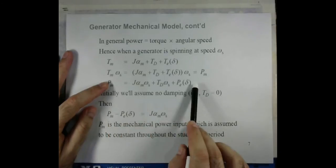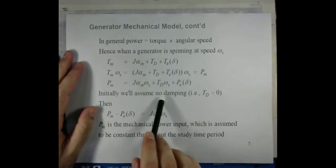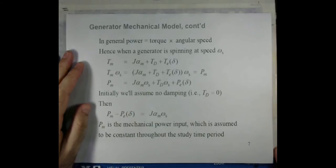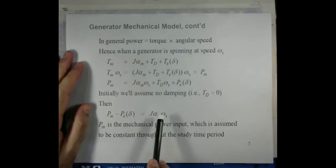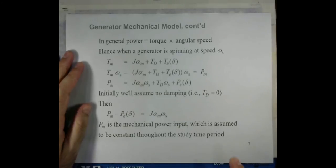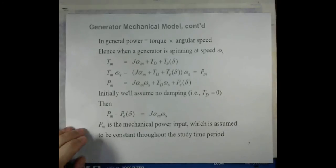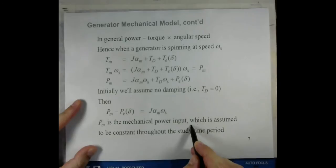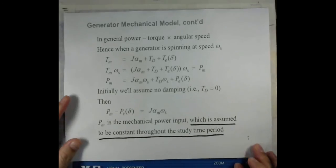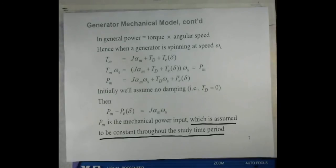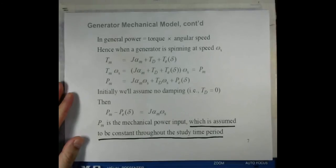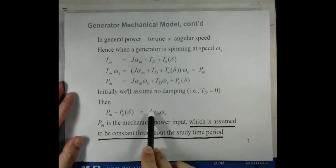By multiplying ω_s on both sides of the torque equation, we get the power equation. Assuming damping is zero, the expression is rewritten as: P_m − P_e = J·α_m·ω_s. P_m is the mechanical input power, which we assume to be constant throughout the entire study period — this is an important assumption for stability analysis.